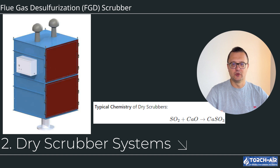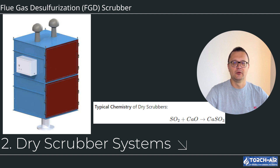After the reaction, the solid byproducts are collected using fabric filters, baghouses, or electrostatic precipitators. Typical chemistry of dry scrubbers is also shown on screen.